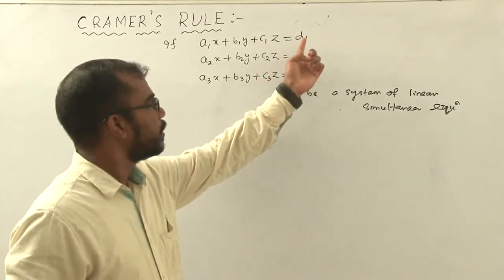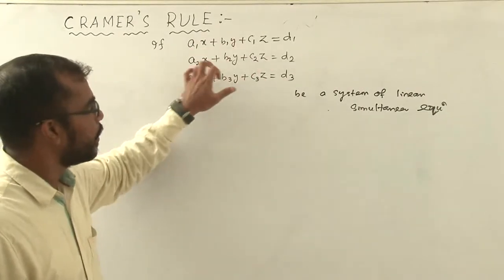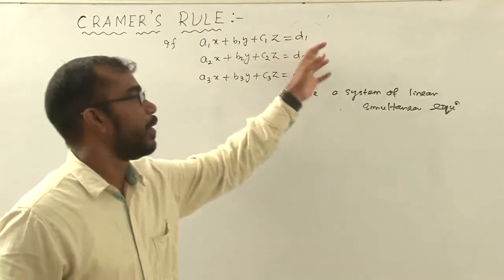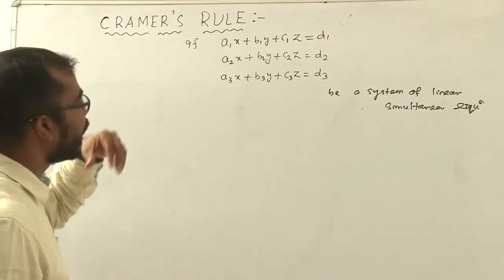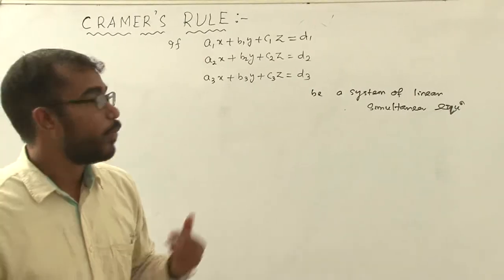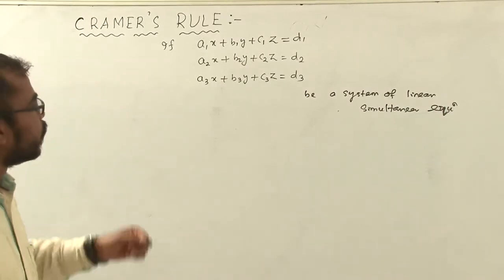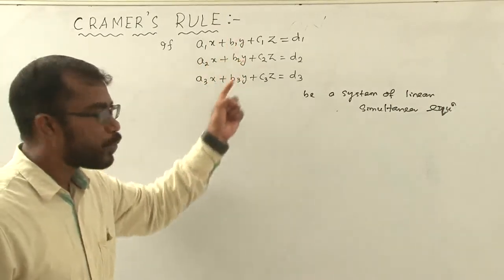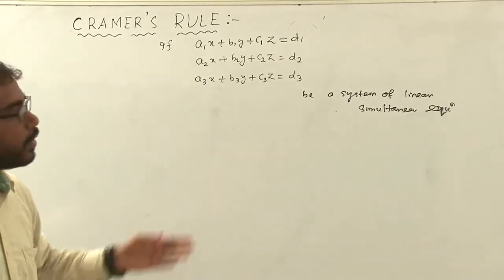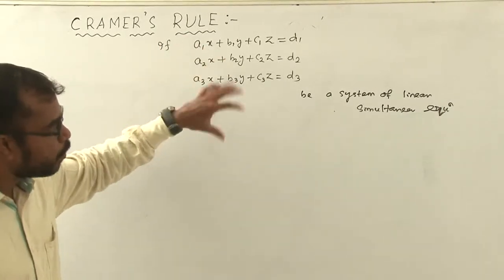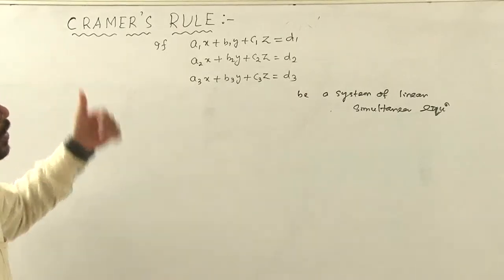Here d1, d2, d3 are constants, and we will say a1, b1, c1, a2, b2, c2, a3, b3, c3 and d1, d2, d3 are all constants. We have to solve them — we have to find the variables x, y and z. So how to solve a system of linear simultaneous equations using Cramer's rule.